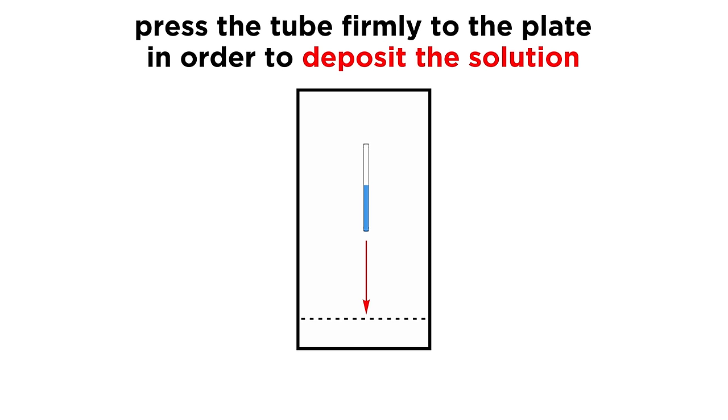We will then spot the plate with the contents of the tube. To do this, press the bottom of the tube to the plate, right on the line we drew, firmly enough that the solution gets deposited onto the plate, but not so firmly so as to disrupt the silica. Spot two or three times to load most of it on there.